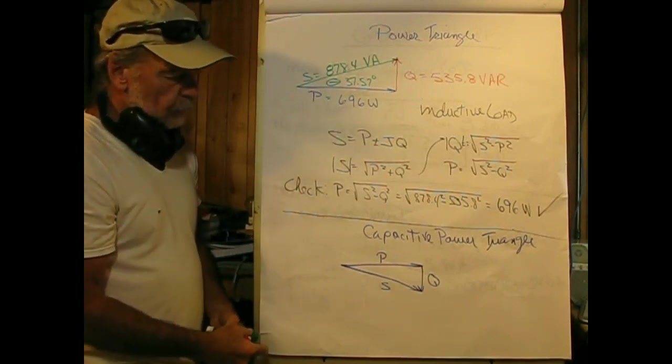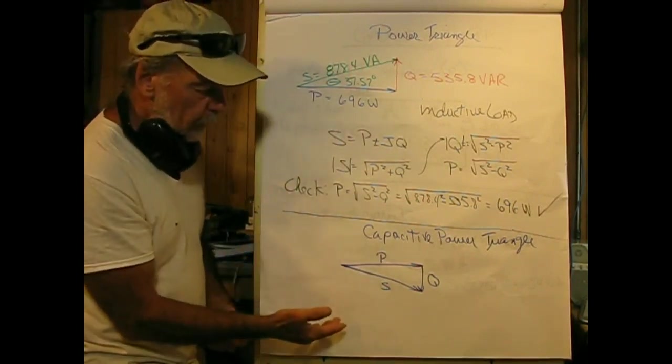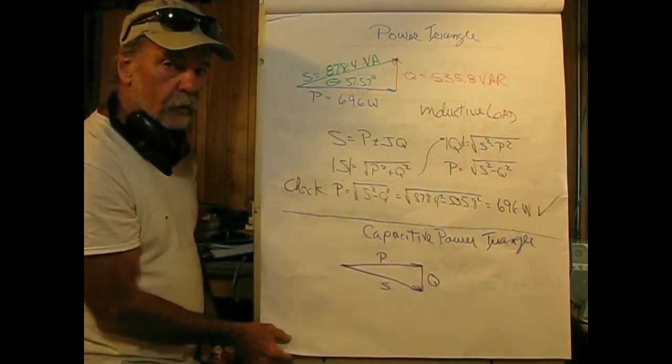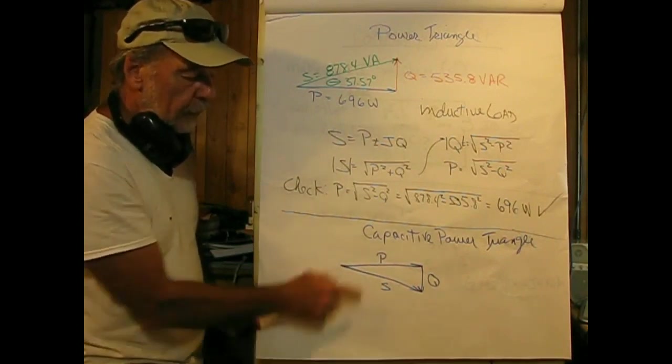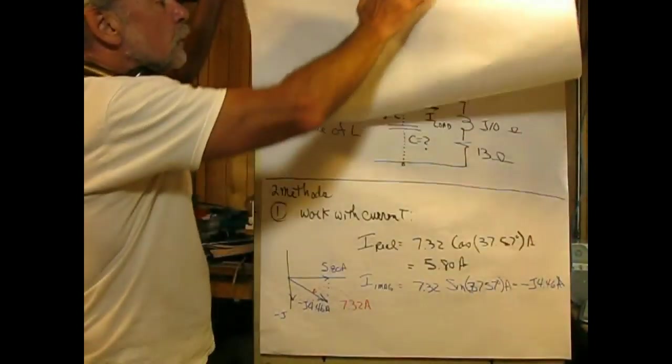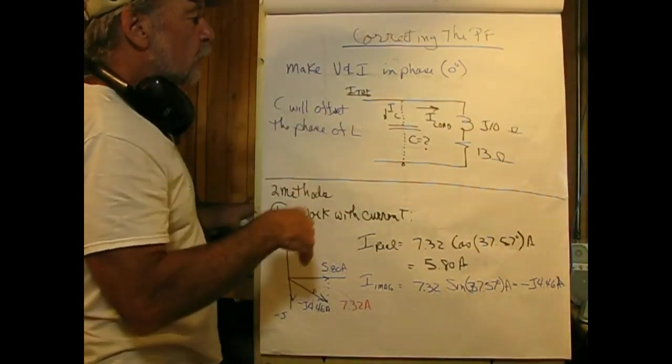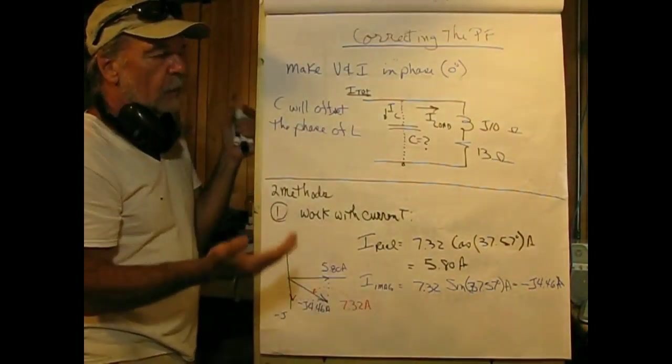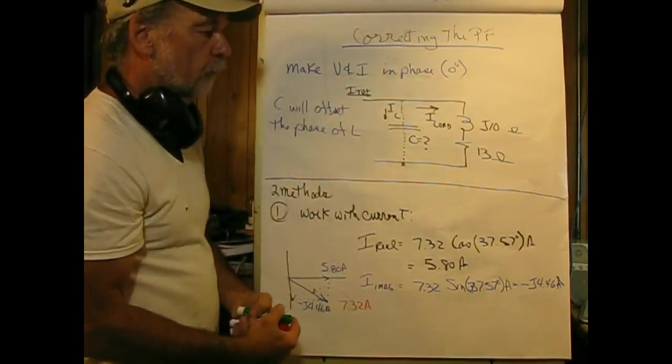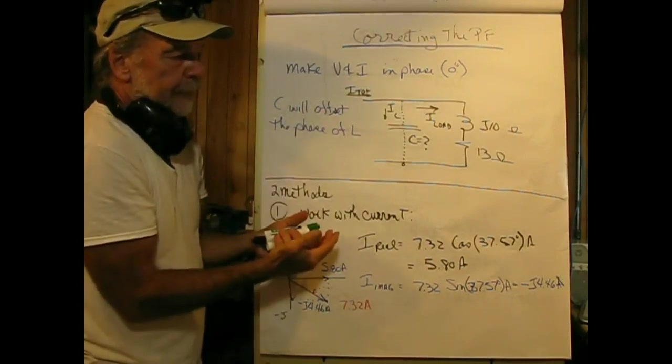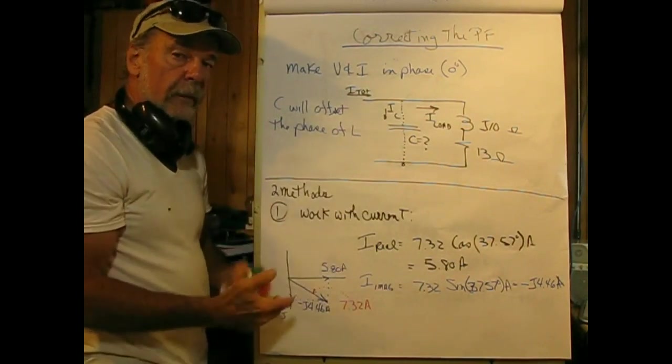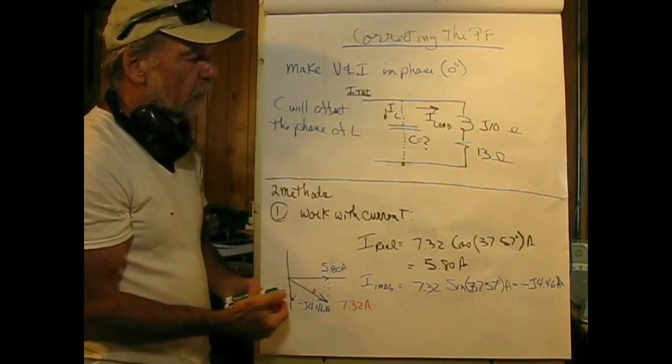For reference, if we have a capacitive environment, the reactive power Q in VAR is going to be going in the other direction, and it's not likely to find an enterprise which has a capacitive flavor to it. So how do we correct this? By correcting it, what we want is to make the voltage and current in phase so the phase angle is zero.